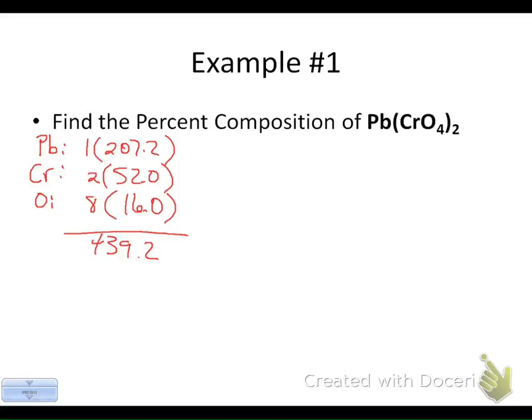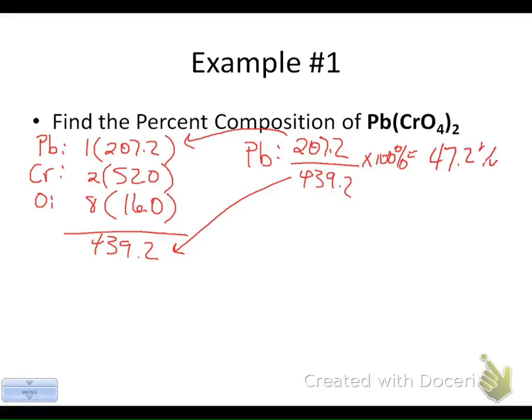So we add all these together, and we get 439.2 grams per mole. Now, we need to find each part to put over this whole. The first part is going to be lead. Lead constitutes 207.2 over the total, 439.2. We'll turn this into a percent, and you may do that in any way that you've learned to do percents from your math class. And that will come out to be 47.2 percent for the lead.